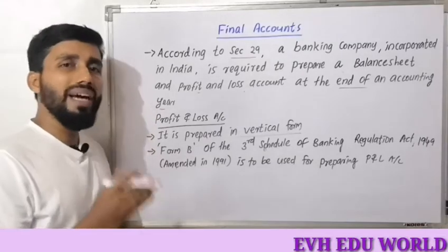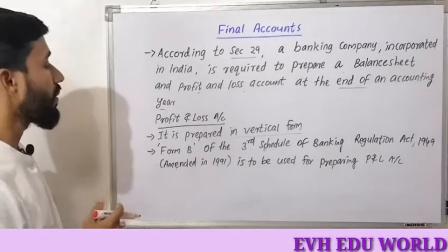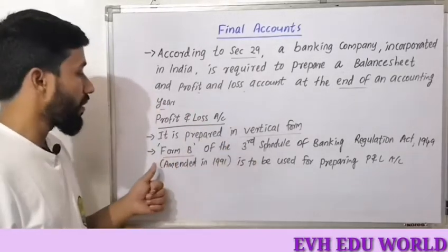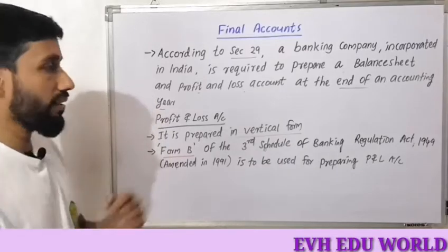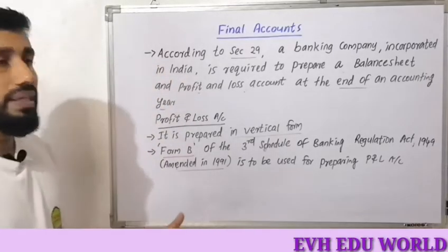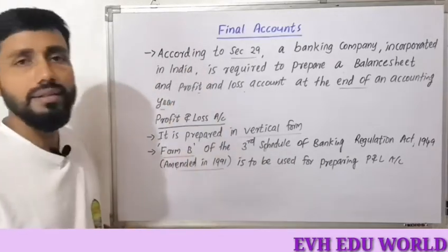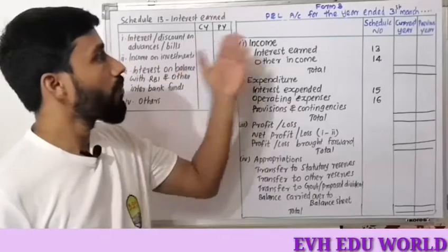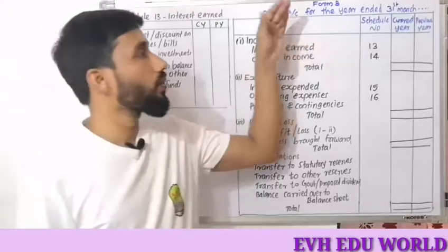We will prepare a vertical format for the Profit and Loss Account — this is called Form B. Under the Banking Companies Act of 1949, Schedule 3, Form B is the prescribed format. It is a vertical format for the Profit and Loss Account, as required under the Banking Companies Regulation Act.